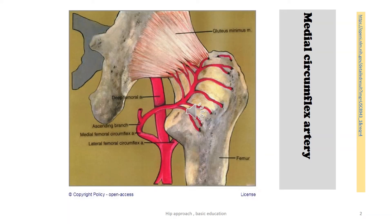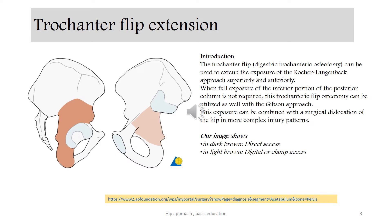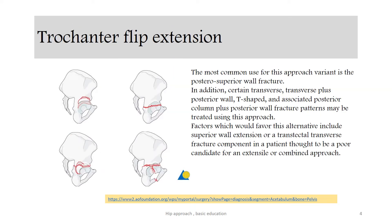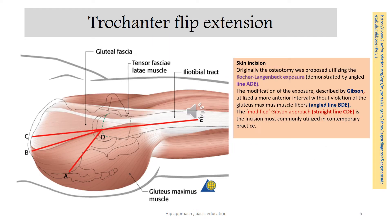Notice the illustration. Notice the deep femoral artery and the medial femoral circumflex artery, which are the main suppliers of the femoral head. Look at the shaded areas in dark brown, direct axis in light brown, and digital or clamp axis. Look at the red lines and notice the modification of approaches.